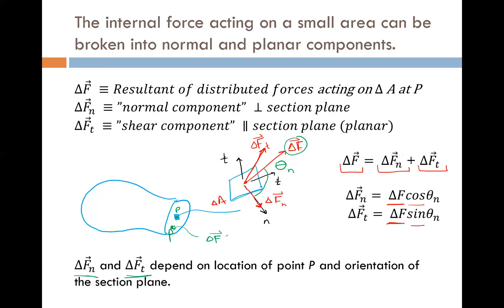Also, if the orientation of the section plane is different, so if instead of having a vertical cut through that member like we did on the previous slide, if we had had an inclined cut like so, we would end up, even at the same location P, with different components because it's a different direction now.